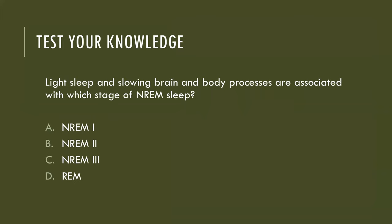Test your knowledge: light sleep and slowing brain and body processes are associated with which stage of NREM sleep? The correct answer is stage two — these are characteristics of a person in stage two NREM sleep.